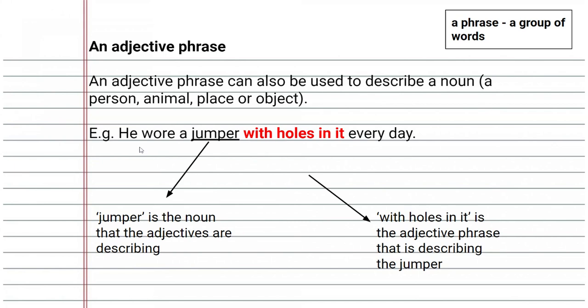So, for example, in the sentence, he wore a jumper with holes in it every day. Again, jumper is the noun. I've underlined the word jumper because it's a noun. And the phrase with holes in it says more about the jumper. It is describing the jumper.